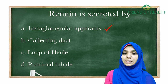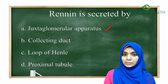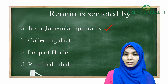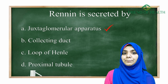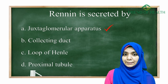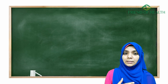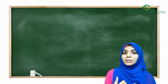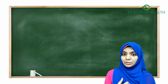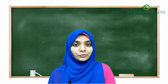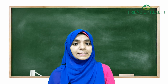The juxtaglomerular apparatus is one of the frequently asked topics and has many interesting things to learn. It is one of the easiest parts of the renal system. Whenever you read about renin, there are some important parts you should know — for example, about the nephrons, the physiology of nephrons, and the parts of nephrons.